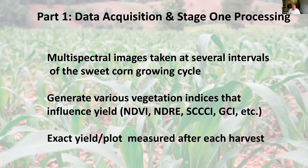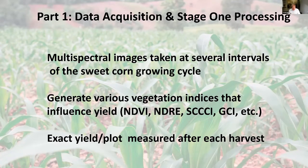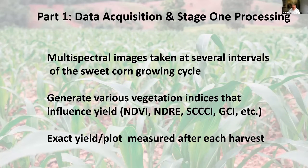We take multispectral images at several intervals throughout the four-month growing cycle of sweet corn, and generate various vegetation indices that influence yield — such as NDVI, NDRE, SCCCI (Simplified Canopy Chlorophyll Content Index), and GCI (Green Chlorophyll Index), among others. After harvest, we measure the exact yield of the plots to use as input for the second stage.